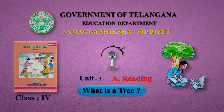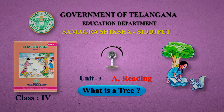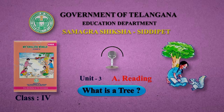They meet a farmer on the way. Amu: What is a tree? Farmer: It is a plough to make my field ready. They keep going.